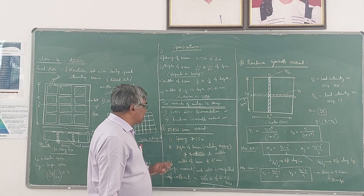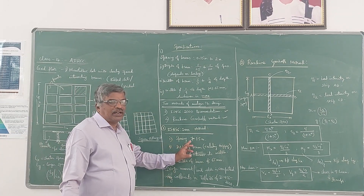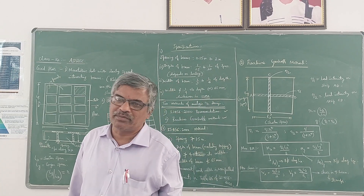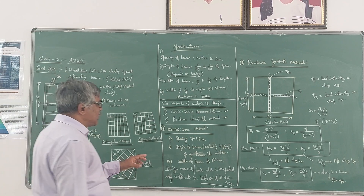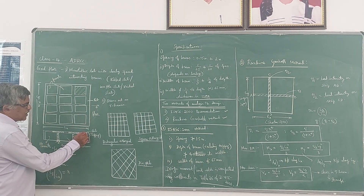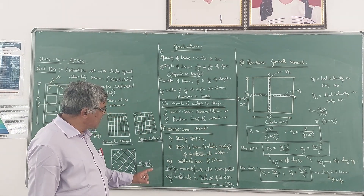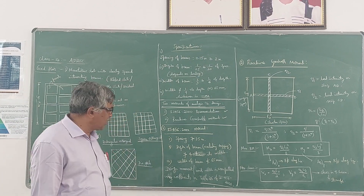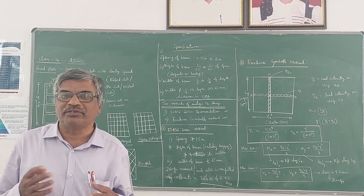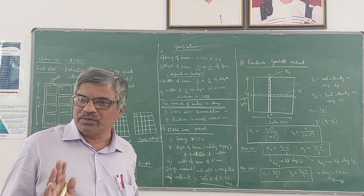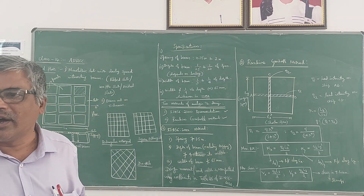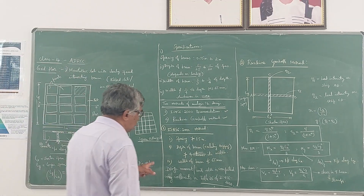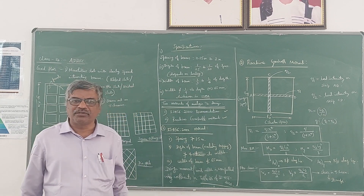In the IS 456:2000 method, spacing should not be greater than 1.5 m. Depth of the rib excluding topping should not be greater than 4 times its width. Width of the rib should not be less than 65 mm. The design moments are calculated using moment coefficients — the same approach used for continuous beams. Table 26 of IS 456 gives the moment coefficients for grid floors, so you must refer to that table.